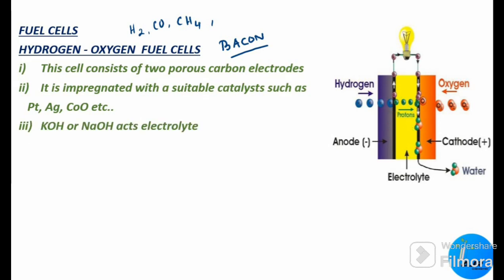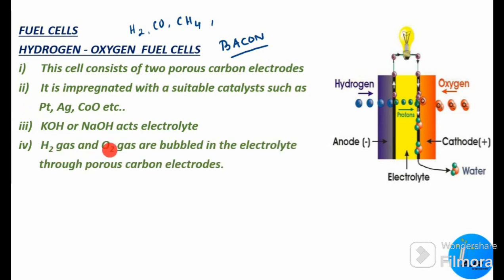In between these two electrodes we have the electrolyte, which is the aqueous solution of potassium hydroxide or sodium hydroxide. The space between the two electrodes is filled with the concentrated solution of KOH or NaOH. Hydrogen gas and oxygen gas are bubbled into the electrolyte through the porous carbon electrodes.